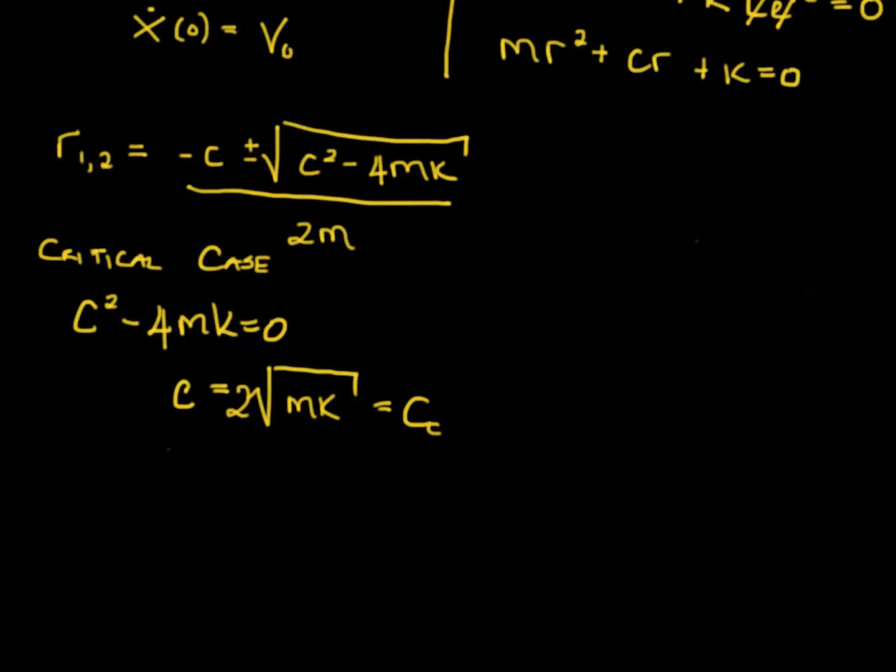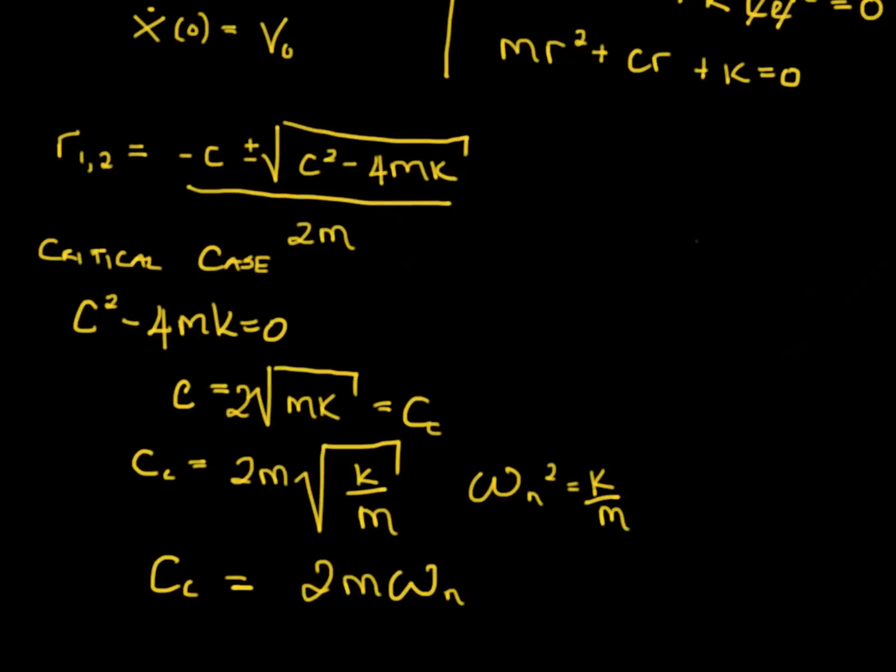We'll also take the time to note that C critical can also be written as 2 M square root of K over M. But we know from before that omega n squared equals K over M. So therefore, C critical is equal to 2 M omega n. This will come in very handy in a second.